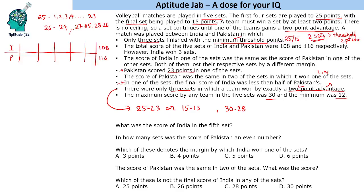What we should start with is that the minimum score was 12. Also given that in one of the sets the final score of India was less than half of Pakistan's. If we consider the 15-point set, India would have to have less than 7.5, which is not possible. So this condition means one set was India 12 and Pakistan 25.